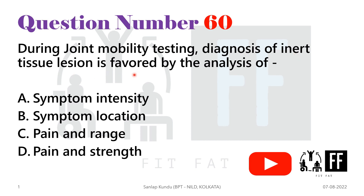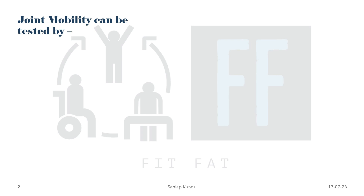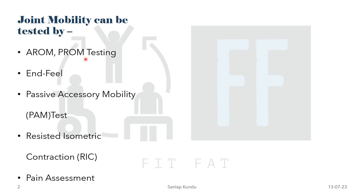You can check joint mobility by various methods. The popular ones are the active range of motion and the passive range of motion testing. You can also check passive accessory mobility or the CAM test, perform resisted isometric contraction, and do pain assessment.